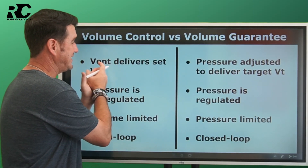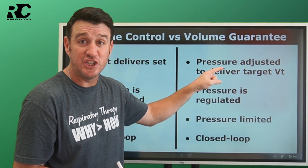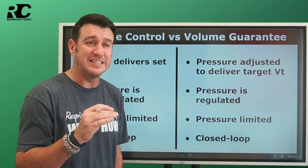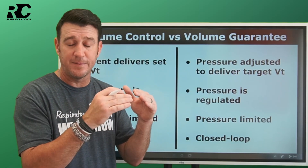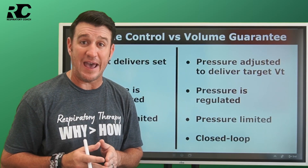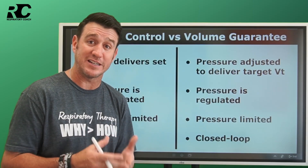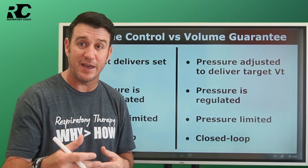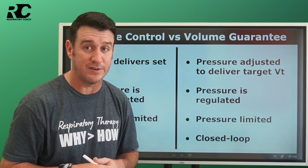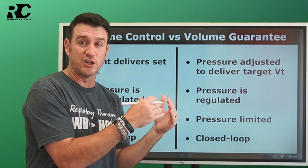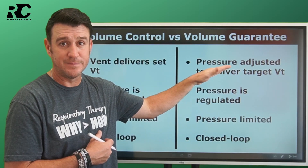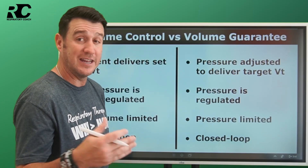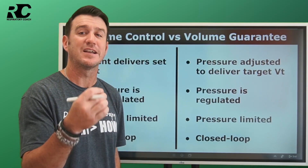Quick recap: volume control delivers the set tidal volume; volume guarantee automatically adjusts pressure to achieve the target tidal volume. Importantly, it doesn't adjust pressure during the breath — it waits for the exhaled tidal volume to come back before making a decision. If the exhaled volume is within the target range, it stays where it is. If pressure was increased and the volume comes back greater than target, on the next breath it turns the pressure down. It's constantly adjusting pressure to stay in that target range based on exhaled tidal volumes, which are driven by compliance and resistance.